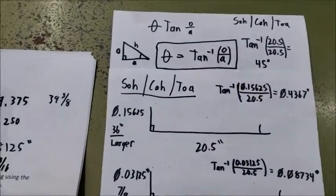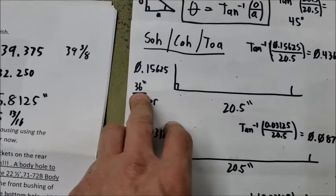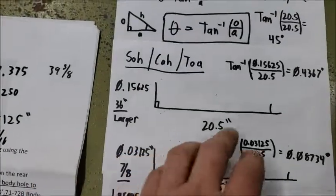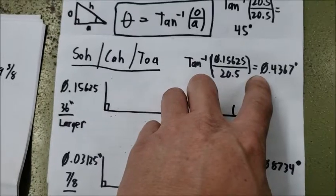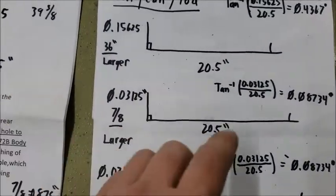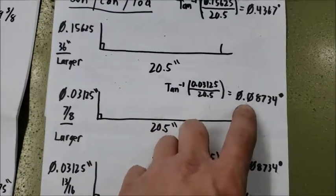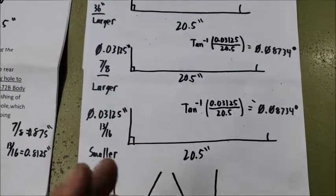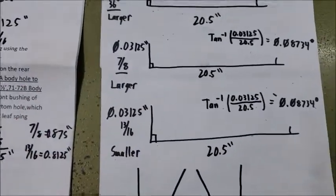So if I decided just to make my life easier and go straight to 36 inches instead of this 35, that would make it basically 156 thousandths larger. So let's see what that equals in degrees. Tangent inverse of that over that gives me 0.4367 degrees, negligible. If I decide to go to 7/8, which is larger, tangent inverse of 0.03125 over 20.5 gives me 0.08734 degrees, even less negligible. So then if I decide to go smaller, it's the exact same dimension but just a negative number basically because we're moving it the opposite direction off of center. It really doesn't matter.